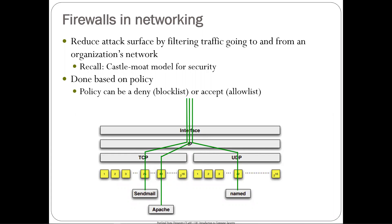Here's an example: a wide open network accepts all TCP traffic across all ports — there are 2 to the 16 ports in TCP and the same for UDP — with services running on different ports. Without a firewall, everything gets through. With a firewall, you filter out certain traffic. In this case, maybe only the Apache service gets incoming traffic from the internet.